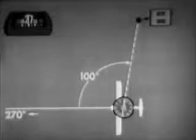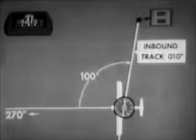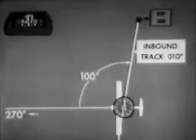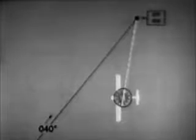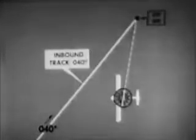To describe our position, we say we are on an inbound track of 010 degrees. There will be times when you will not be cleared directly to the station, but will be given a definite track to intercept and follow. Suppose we were cleared to intercept and go to the station on an inbound track of 040 degrees. The first step is to turn parallel to our desired track to determine the angular distance we are located from that track.